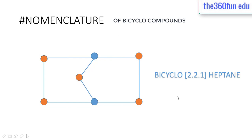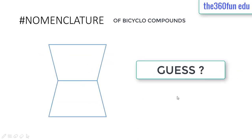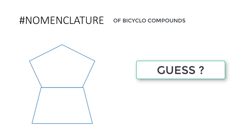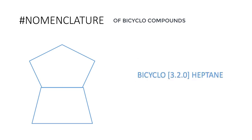We have heptane because that is the total number of carbon atoms in the compound. Similarly, another example is bicyclo[2.2.0]hexane and bicyclo[3.2.0]heptane. All the rules of cyclic compounds are applicable in the nomenclature of bicyclo compounds.